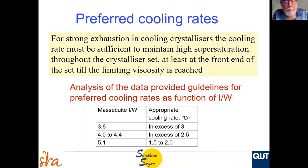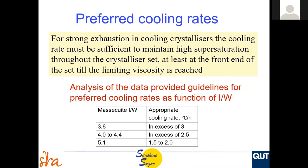That value there on the screen of 5.1 — that's our highest one we had in this test, which is very high for a C masscuite. It did give the best performance in terms of the lowest purity of molasses. But as you can see from that, you don't cool too fast, otherwise your viscosity gets too high. Feel free to send any more questions through to either the chat or the Q&A. We'll just wait another little while to see if any more flow in. In the meantime, I'll just do my wrap-up and if any questions come in we'll go back to them.